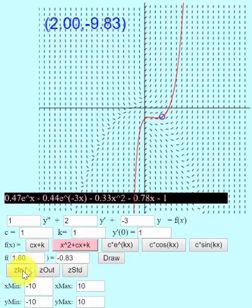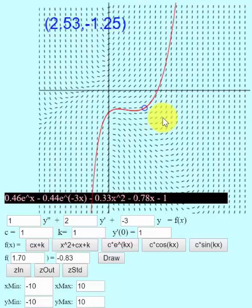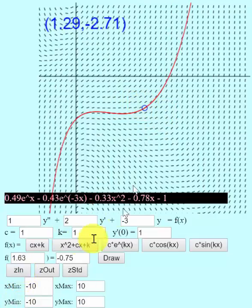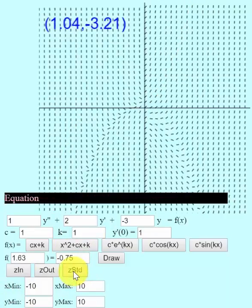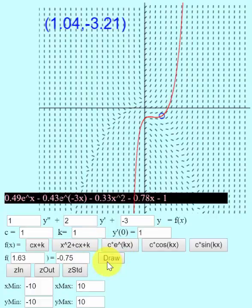I could also zoom in. So if I hit z in, and then I can click maybe in this point that I'm interested in, and it'll zoom in at that point. If I click z in again, it'll zoom in again. If I click z STD, that goes back to where I was before, and I can hit draw.